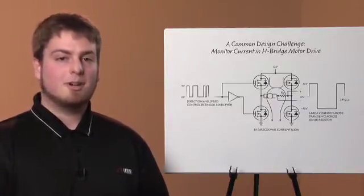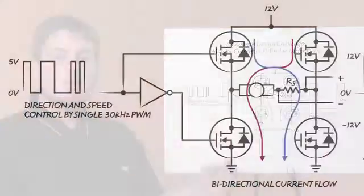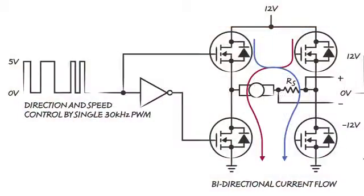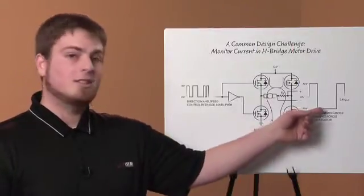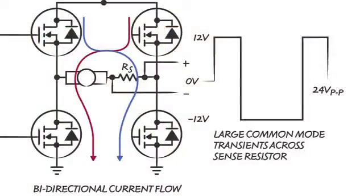The H-bridge is controlled by a high frequency PWM that is typically above 20 kilohertz. The PWM turns the driving FETs on and off at a set duty cycle, effectively controlling the direction the motor spins, the average voltage across the motor, and the current through the motor. The switching FETs create large common mode voltage transients with very fast edges across the inputs of the amplifier. This means the amplifier must be fast enough to monitor the bidirectional switching current and also be able to reject the large common mode voltage changes.